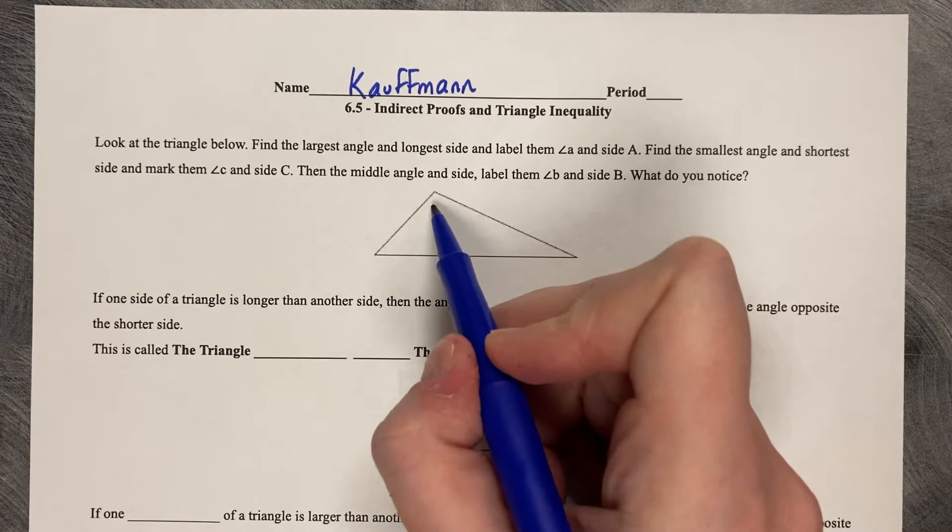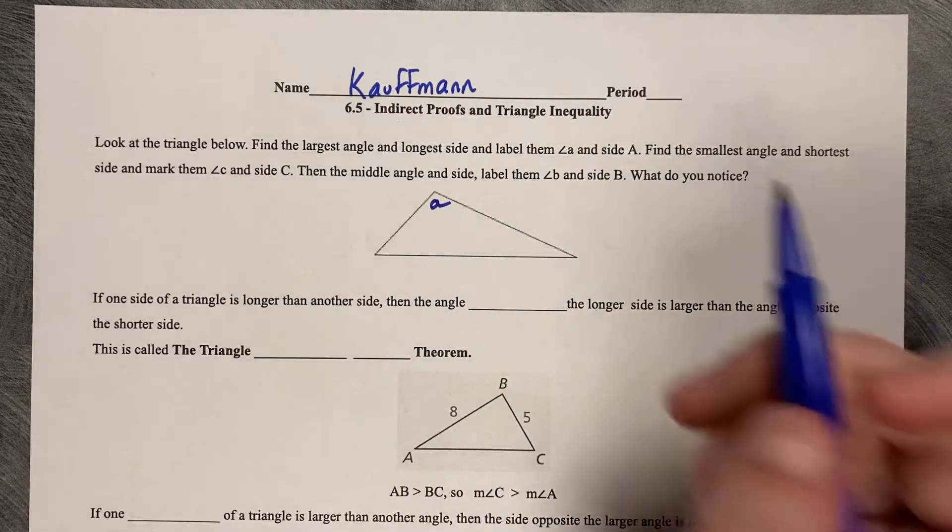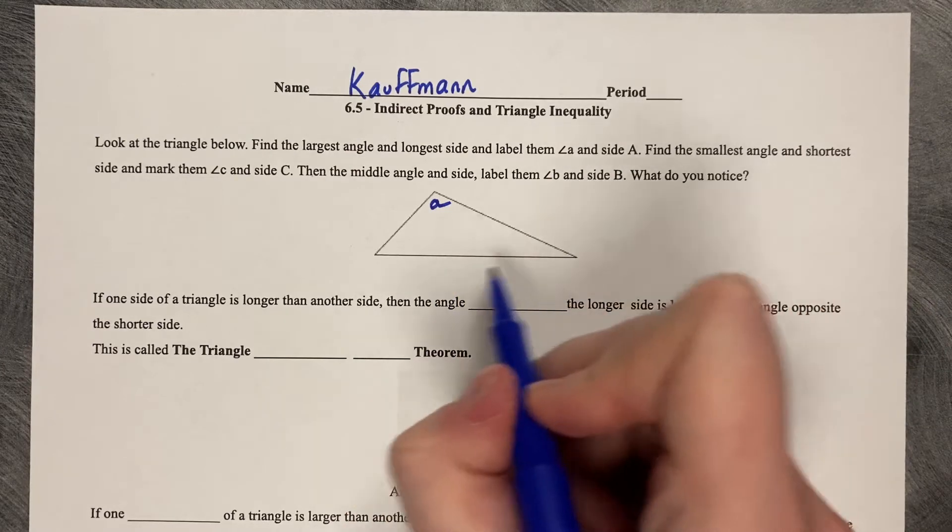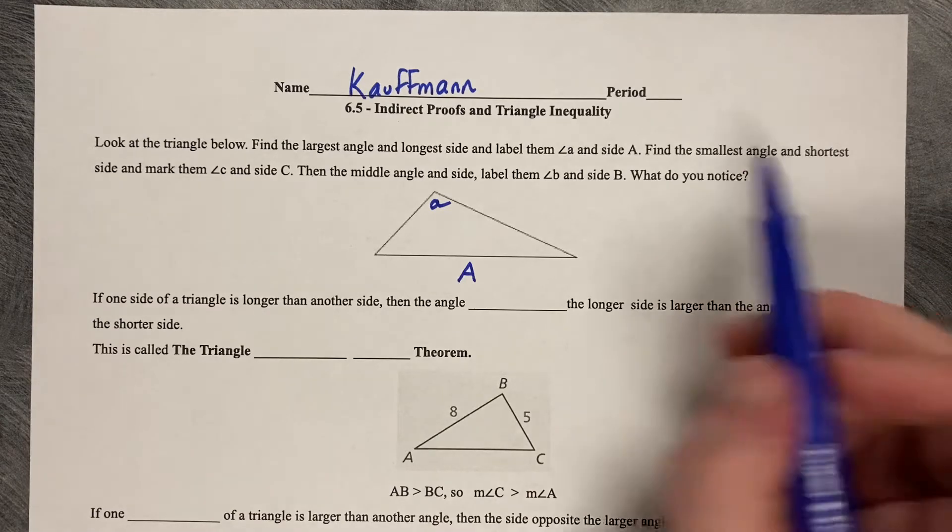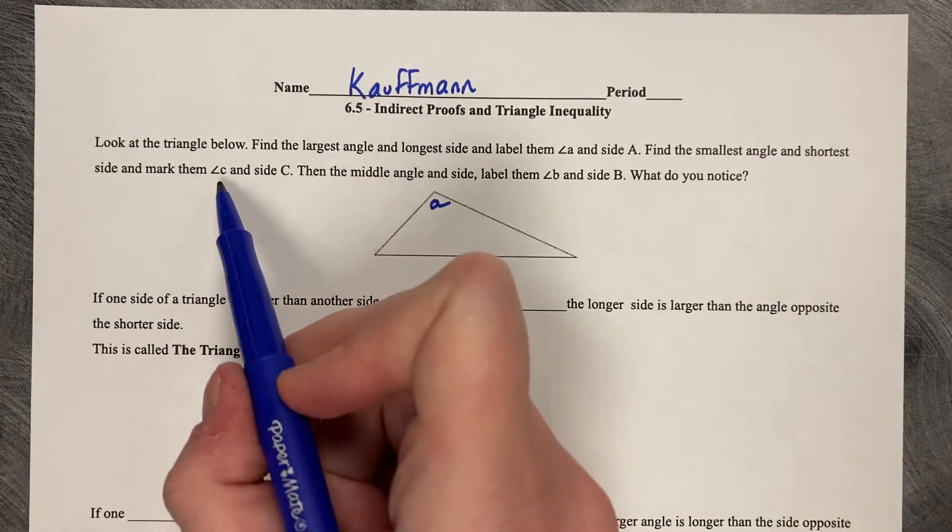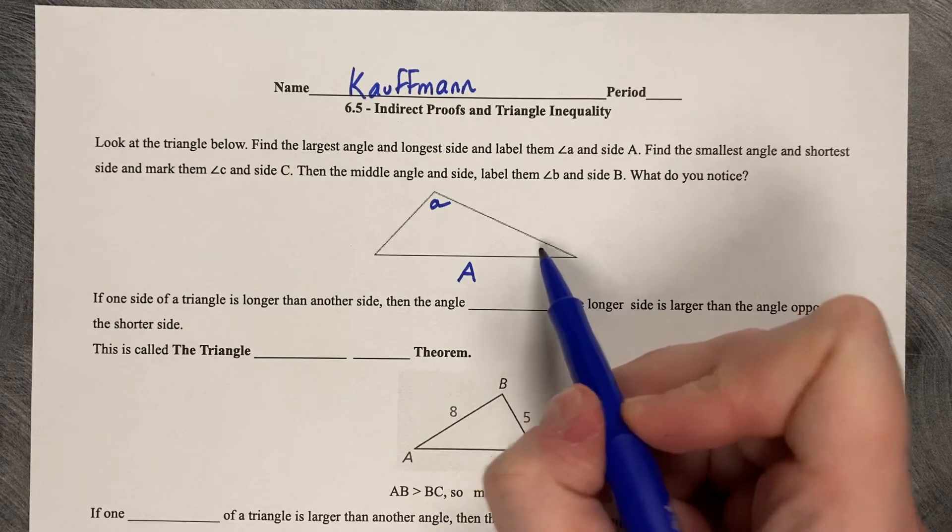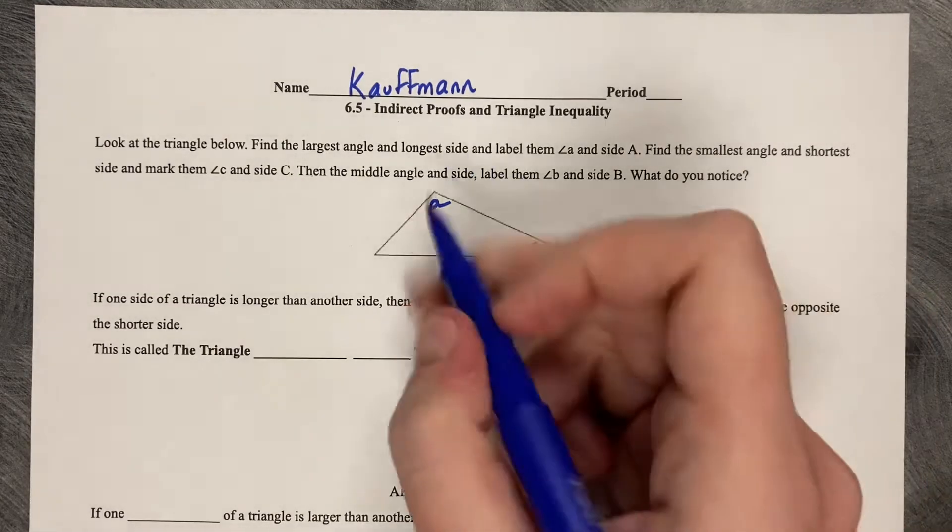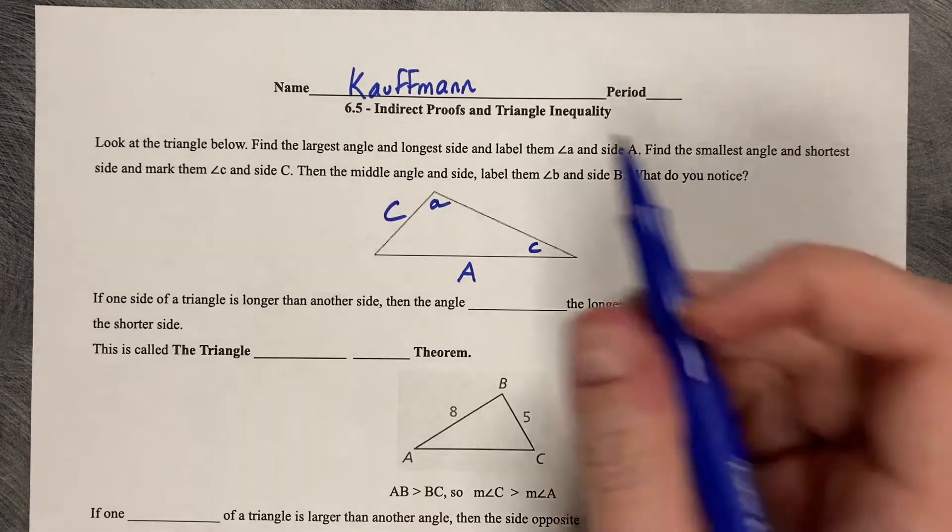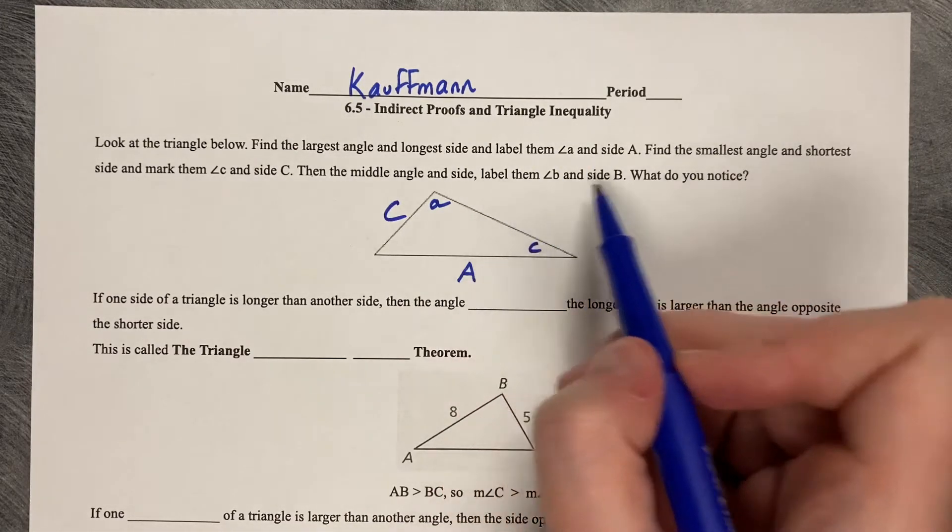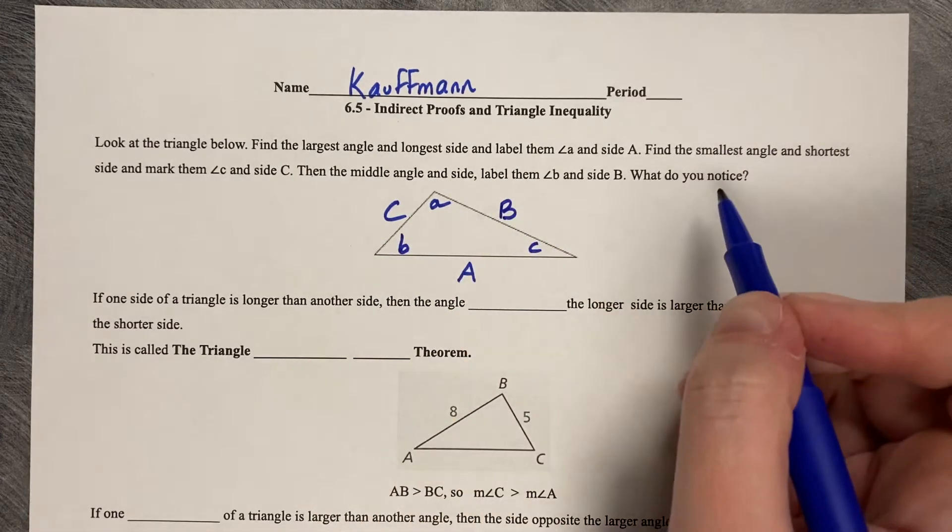The largest angle is this one off top, so I'm going to call that angle A, and the longest side is this bottom side, so I'm going to label that side A. Find the smallest angle and the shortest side and mark them angle C and side C. So here's my smallest angle, angle C, and here's my smallest side, side C, and then the middle angle and side and label them B and side B. That has to be the last one. What do you notice?